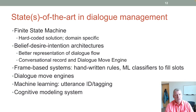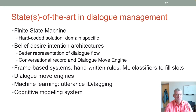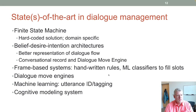State of the art in dialogue management typically uses a hidden Markov model or a finite state machine with hard-coded, domain-specific solutions — best for closed-vocabulary or domain-specific tasks. There can also be belief-desire-intention (BDI) architectures that model belief, desire, and goal, providing a better representation of dialogue flow. The conversational record can be tracked through a Dialogue Move Engine. Frame-based systems use handwritten rules and machine learning classifiers to fill slots.